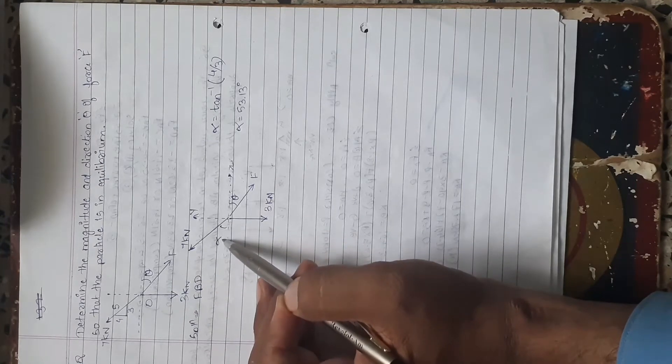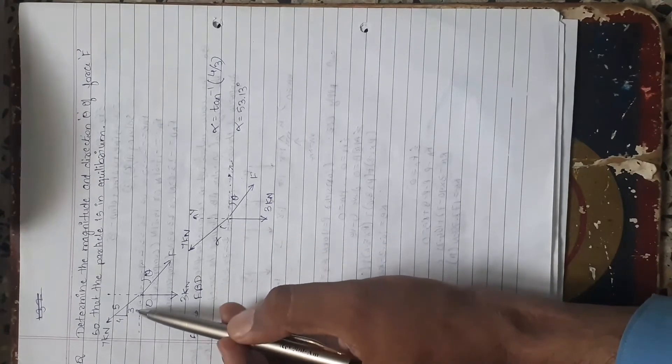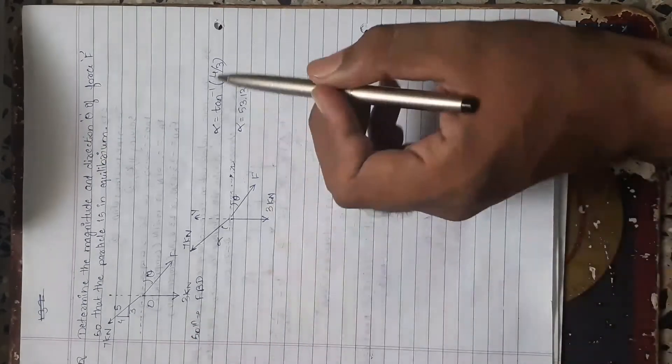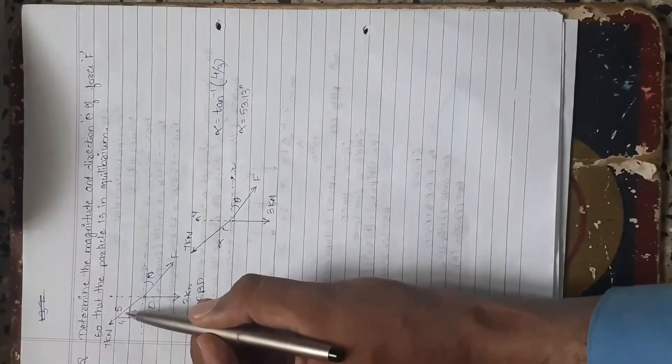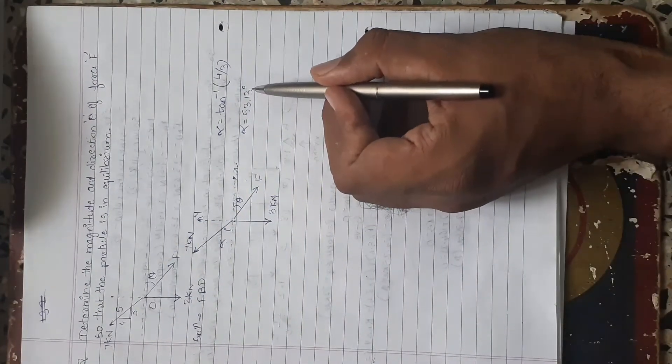In order to find out value of angle alpha, use the sides of the triangle. So value of angle alpha is tan inverse 4 by 3, which comes to be 53.13 degrees.